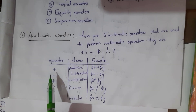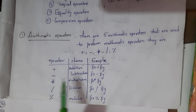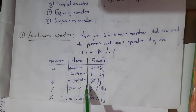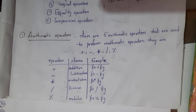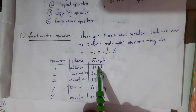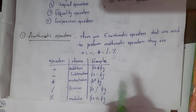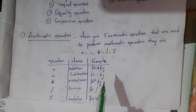There are five arithmetic operators: addition, subtraction, multiplication, division, and modulus. For example, $x + $y — in order to perform an addition operation we use the plus symbol. Similarly, these are the examples for the remaining arithmetic operators: subtraction, multiplication, division, and modulus.